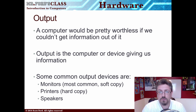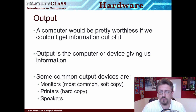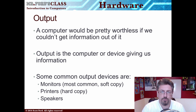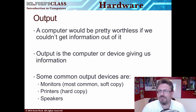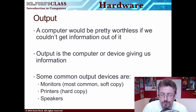The three big output devices would be a monitor — this is your most common output device, what you're seeing right now. It produces soft copy. You have printers, which produce hard copy, something you can touch. And we also have speakers. If you're listening to the soothing sounds of my voice, you're using speakers.